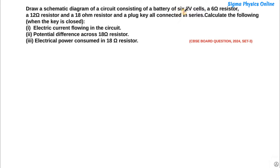So here we have a battery of 6 2-volt cells. That means there are 6 cells, each having a potential difference of 2 volts, and then we have 3 resistors and a plug key, all connected in series. So first we will draw the circuit diagram and then we will solve the following questions. Let's draw these 6 2-volt cells first.